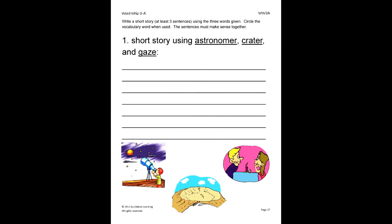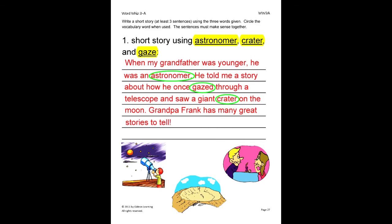On this last activity, the student will write a short story of at least three sentences using the words given. Circle the vocabulary word when it is used. The sentences must make sense together. Here is an example of a good short story. When my grandfather was younger, he was an astronomer. He told me a story about how he once gazed through a telescope and saw a giant crater on the moon. Grandpa Frank has many great stories to tell.